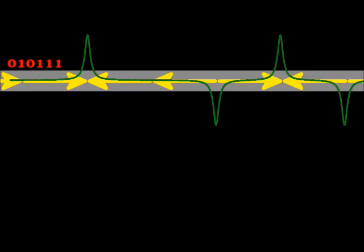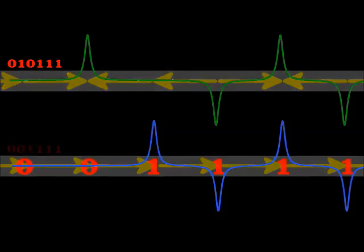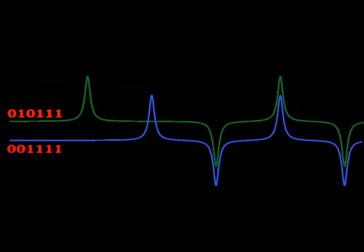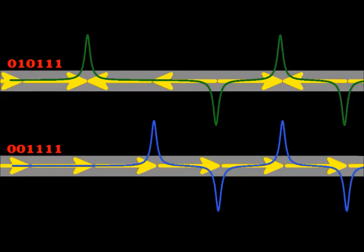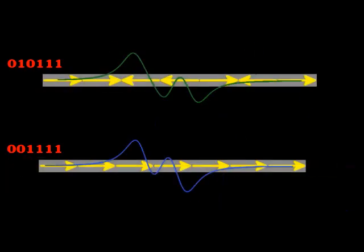We would be easily able to distinguish it from, say, this similar sequence. If we compare them, they clearly differ. Engineers, though, always work to get more and more data onto a hard drive. One way to do this is to shrink the magnetic domains, but look what happens to the voltage spikes when we do this.